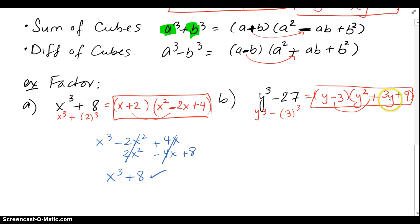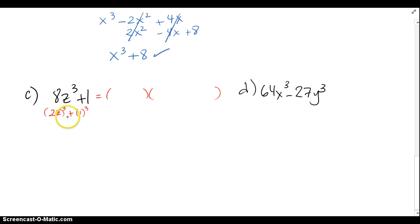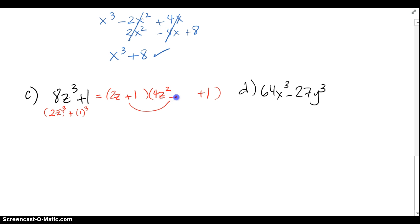Don't bother trying to factor the trinomial further — it's always going to be prime. For 8z cubed plus 1, 8 is a perfect cube and z is cubed, so the base is 2z. And 1 cubed is 1, so the base is 1. The small binomial is 2z plus 1. Then square 2z to get 4z squared at the front, square 1 to get 1 at the end, switch the sign to minus, and multiply 2z and 1 to get 2z in the middle.